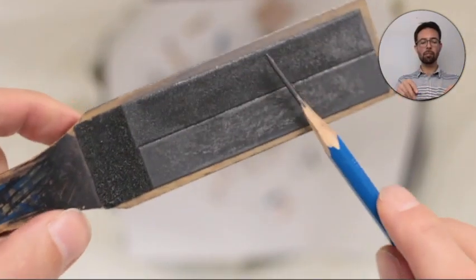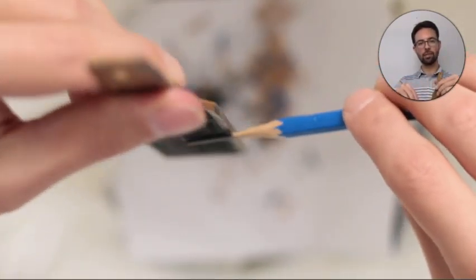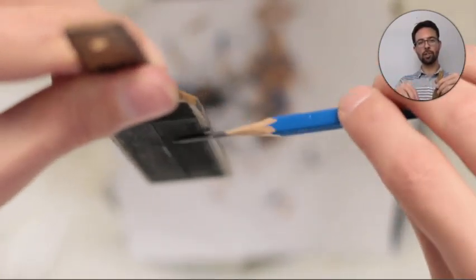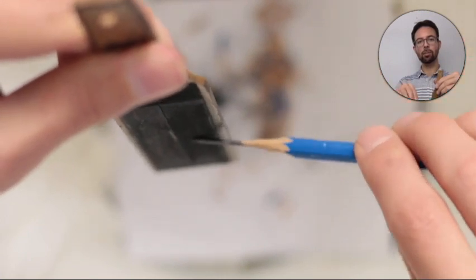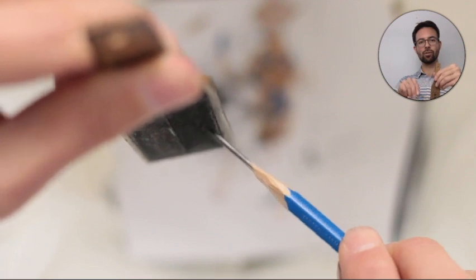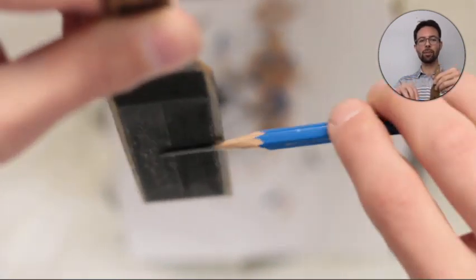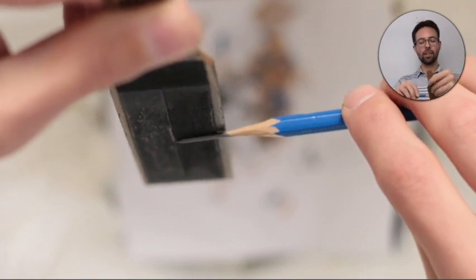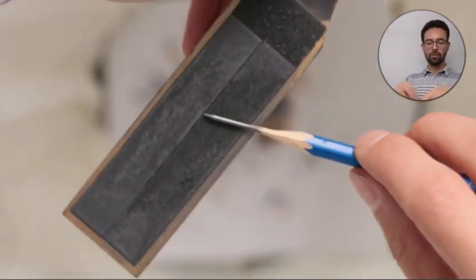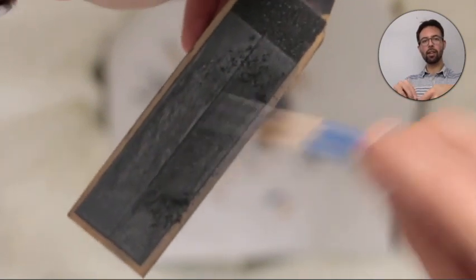And to do that, I'm going to keep my pencil pretty flat as I sharpen. I don't want to have a steep angle because if I do that, I will just shorten my pencil. That's not the point. So I'm going to do something like this. And I will go back and forth, back and forth, back and forth, and then twist.